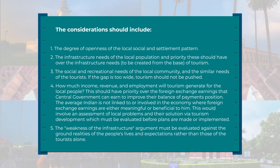This would involve an assessment of local problems and their solution via tourism development, which must be evaluated before plans are made or implemented. The weakness of the infrastructure argument must be evaluated against the ground realities of the people's lives and expectations, rather than those of the tourists alone. A classic example is a project in the Manali area to build a ropeway which the local population resisted entirely, and the project was a non-starter because locals were against that development. As we can see, the concept of infrastructure means different things to different people.